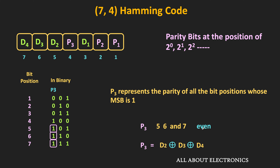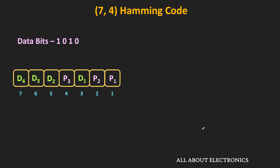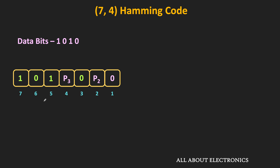The parity bits are at bit positions which are powers of 2. To understand the encoding, let's take an example. Let's say we want to encode some data bits into the 7-bit Hamming code. First, we write down these data bits at their corresponding positions. Parity bit P1 is selected such that the overall parity of bits at positions 3, 5, 7, and P1 is even. At bit positions 3, 5, and 7, the bits are 0, 1, and 1. Therefore, for even parity, P1 should be equal to 0, so that the parity of that group remains even.